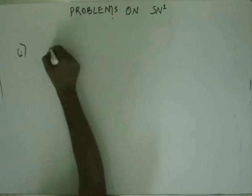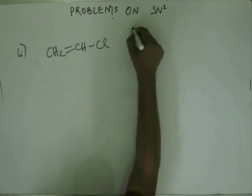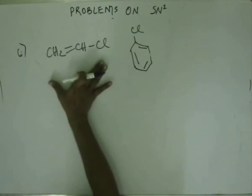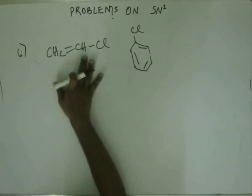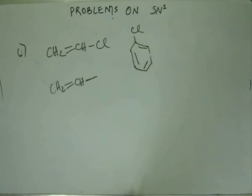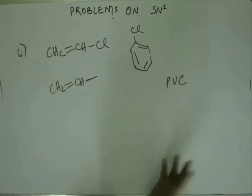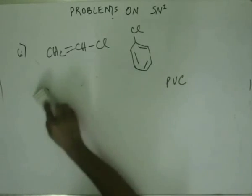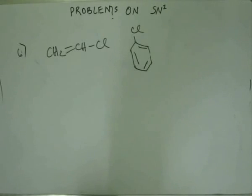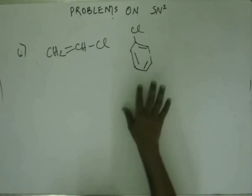To add to what we have just discussed, we can consider vinyl chloride together with chlorobenzene. Vinyl chloride — this is the common name of this structure, the CH2=CH group is called the vinyl group. This is used to make the polymer PVC — polyvinyl chloride — so vinyl chloride is the monomer for that polymer. Both vinyl chloride and chlorobenzene do not show either SN1 or SN2. Intuitively, extending the ideas discussed for chlorobenzene, you can guess why vinyl chloride should not show SN1 or SN2.